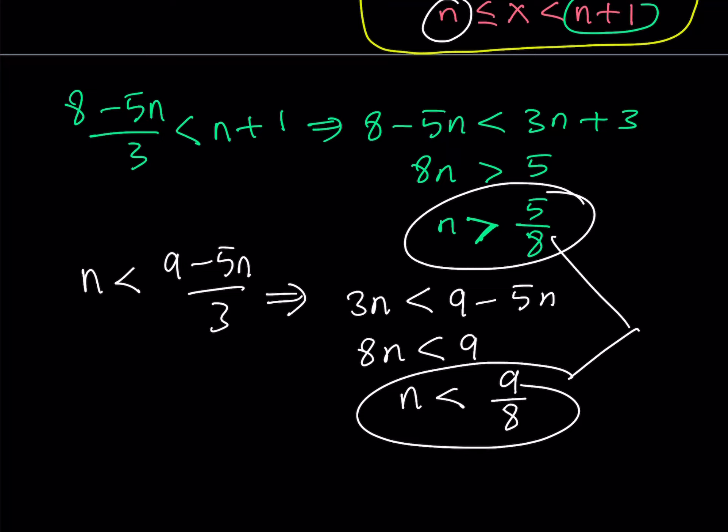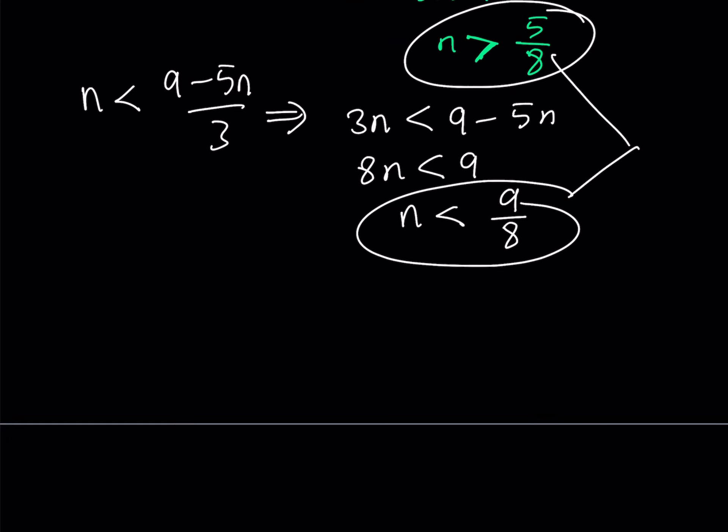So I got to put these two together. That means that n needs to be between 5 over 8 and 9 over 8. And remember that n is an integer because the floor value or the ceiling value, by definition, of any quantity is always an integer. So the only integer that can go in this interval is n equals 8 over 8, which is 1. So n needs to equal 1.